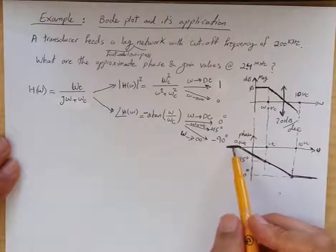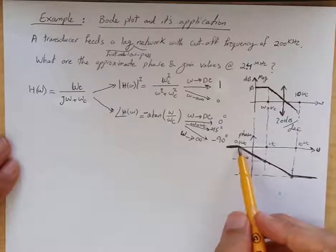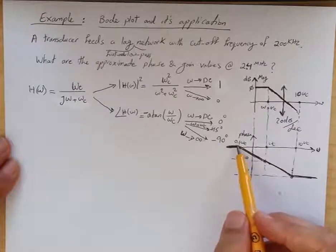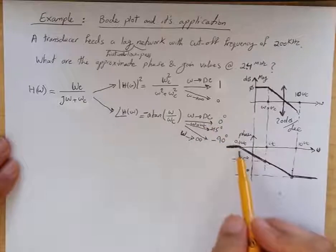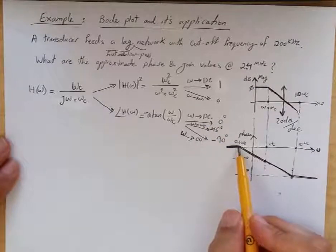This is approximated in the phase Bode plot like this. For frequencies below one-tenth of ωc, we can approximate the phase to be 0 degrees, as if we are at DC.